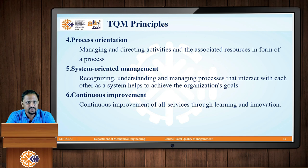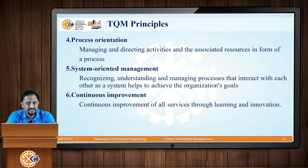The next principle is process orientation — managing and directing activities and associated resources in the form of a process. There are different kinds of resources: man, machine, material, and method. If you are able to manage and direct these different resources in the form of a process, then your task of achieving TQM will be easy.